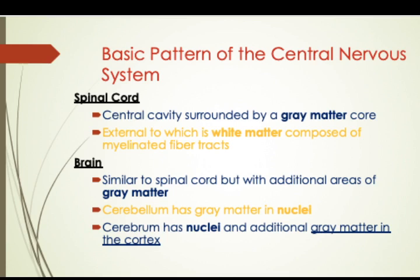Looking at the basic pattern of the central nervous system, you have the spinal cord. The spinal cord is the central cavity surrounded by a grey matter core. External to it is the white matter, which is composed of myelinated fiber tracts. The human brain is similar to the spinal cord but has additional areas of grey matter. The cerebellum has grey matter in the nuclei, and the cerebrum has nuclei and additional grey matter in the cortex.